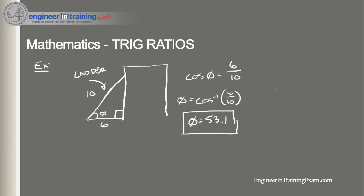There are many other ways trig ratios appear in real-world problems. For example, if someone is on a 50-foot cliff looking down and sees an animal 100 feet away, we can use trig ratios to determine the angles or find the hypotenuse — whatever we need. Those are just simple examples of problems using trig ratios.